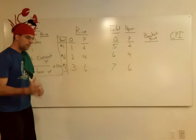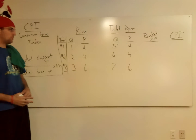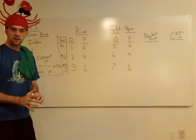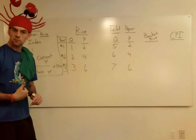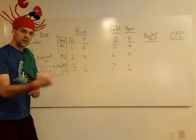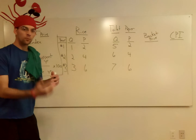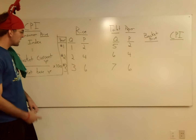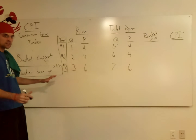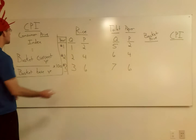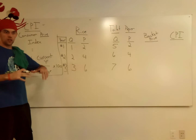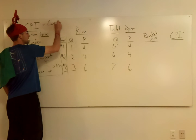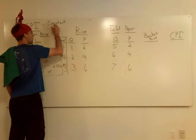So that's going to make a big difference, because yesterday we held the prices nice and constant so that we could see what was happening to the quantity numbers. Here, we want to know what's happening to the price. So we've got to let the price change so we can see how it changes from year to year — which means we are going to need constant quantities here.